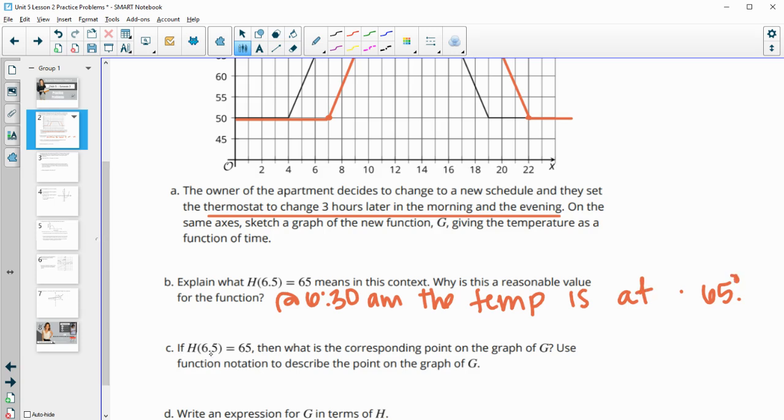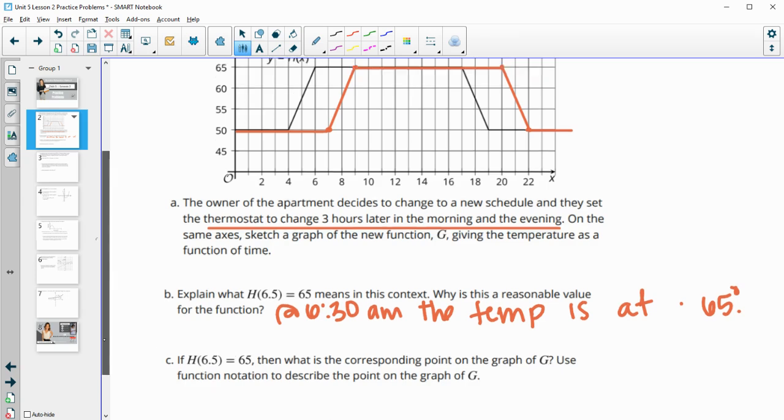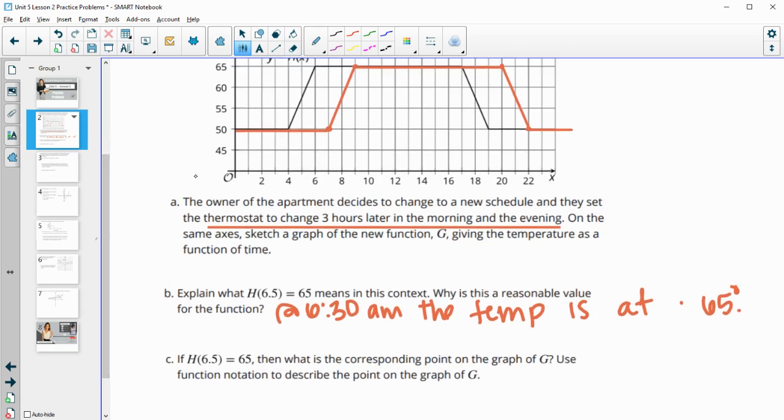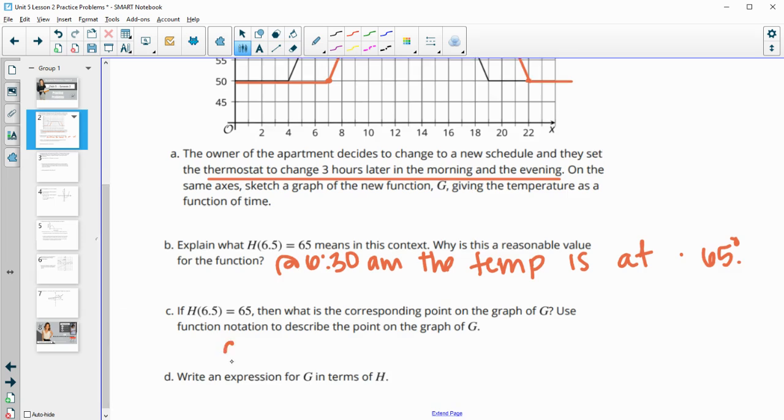So then if H of 6.30 is 65, so the original setting, if at 6:30 the temperature is 65 degrees, what's the corresponding point on the graph of G? So now remember G moved everything over three hours or later three hours. So this is going to happen at 9:30 instead that it's going to be 65 degrees since we're three hours later.